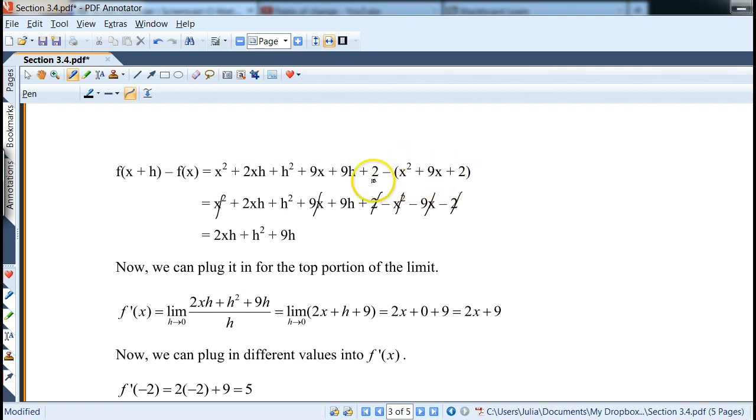We can distribute the negative and then note that everything that doesn't have an h in it is going to go. Pretty much the original function is gone. So what we have remaining is 2xh plus h squared plus 9h. Only three terms remain.